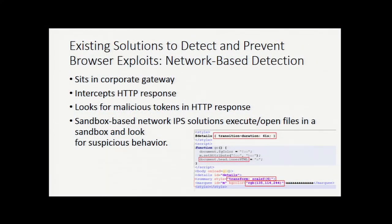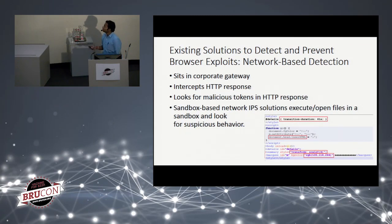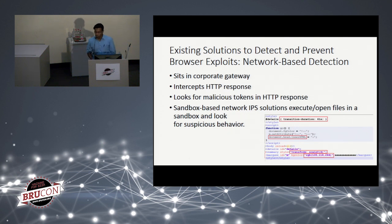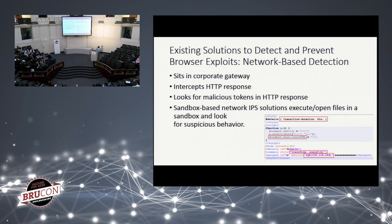Now looking at network-based detection systems: they sit at the corporate gateway, monitor all traffic the organization accesses, intercept HTTP responses, and look for malicious tokens in those responses. Based on that, they conclude whether suspicious content is being delivered to the user's browser. For example, a signature might look for a specific token in a page to raise an alert.